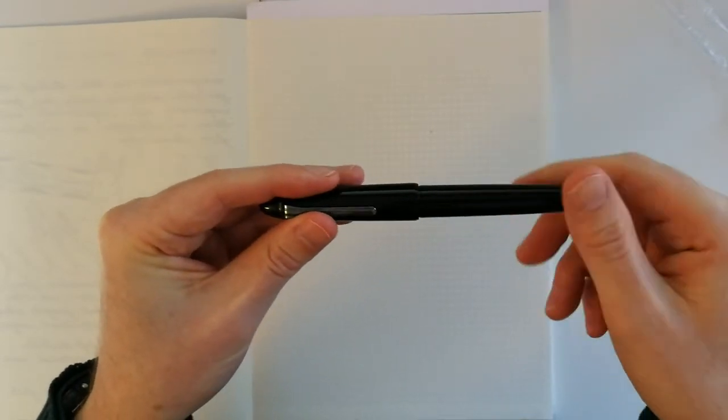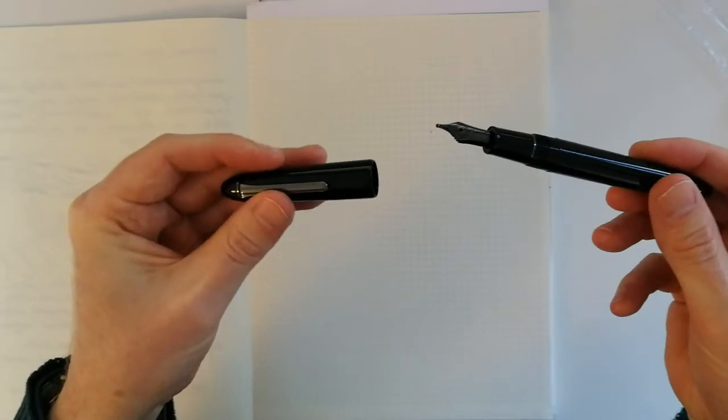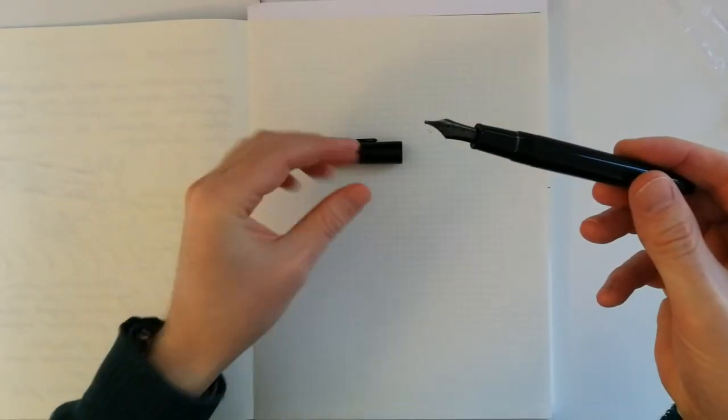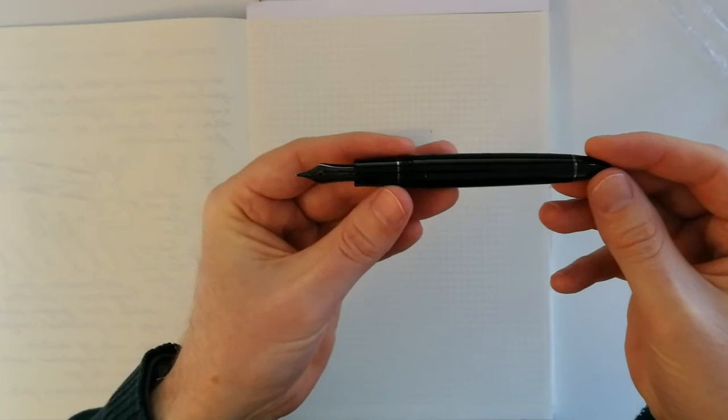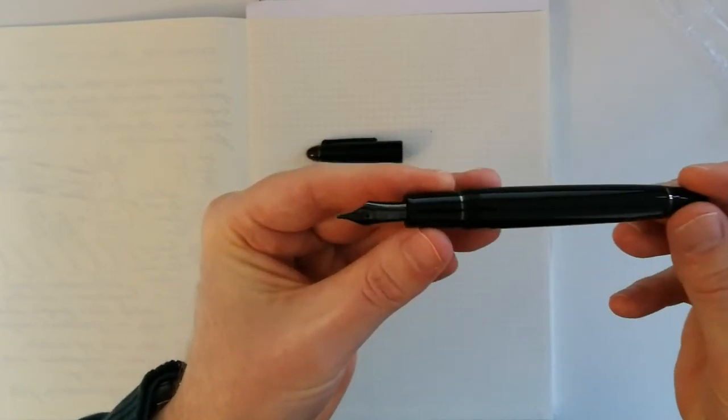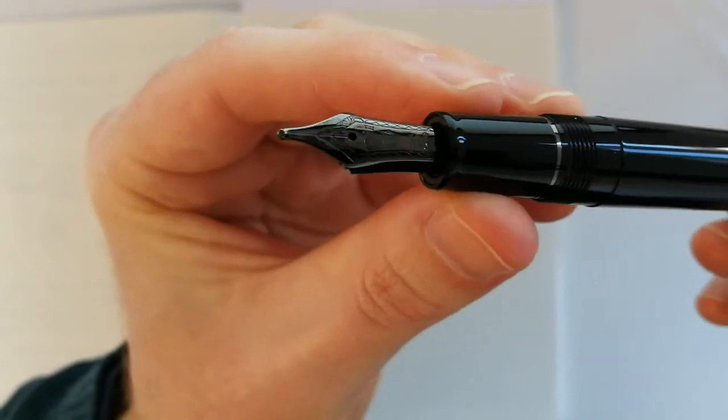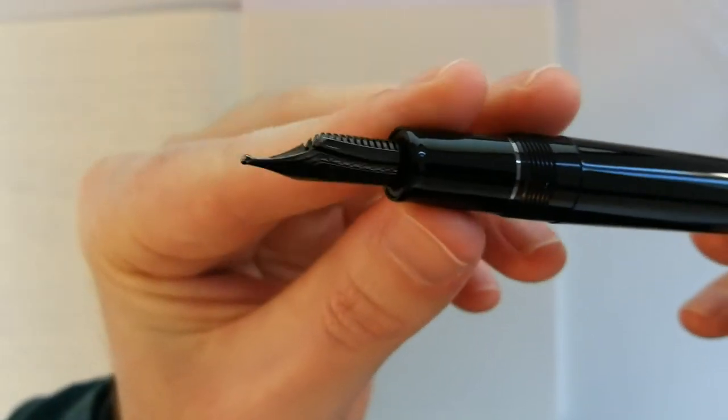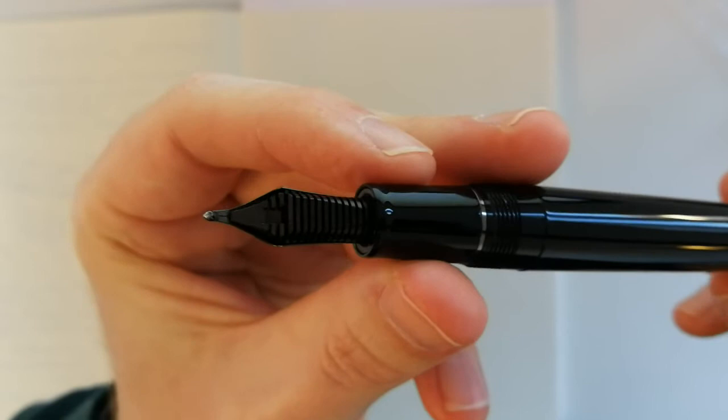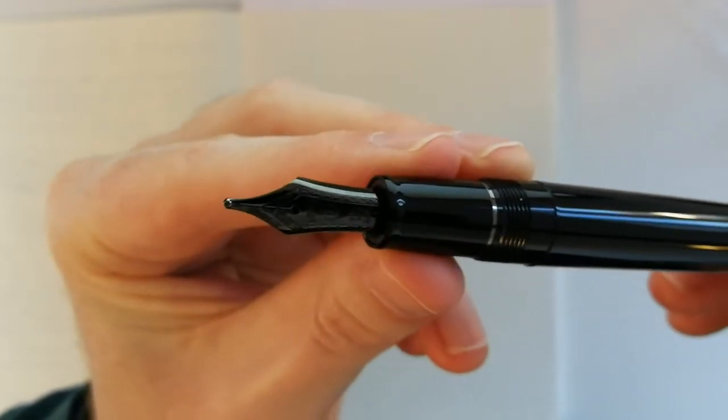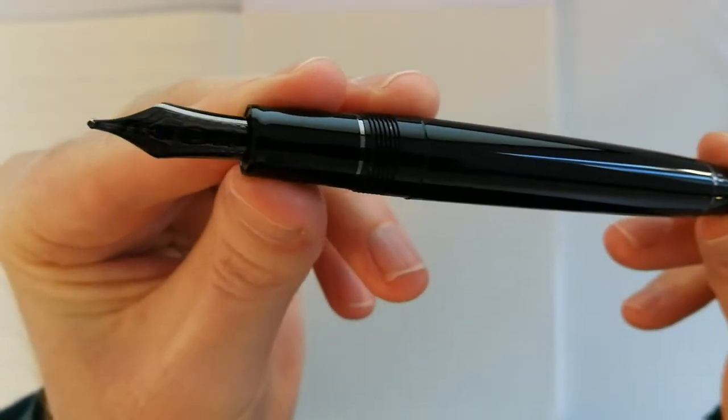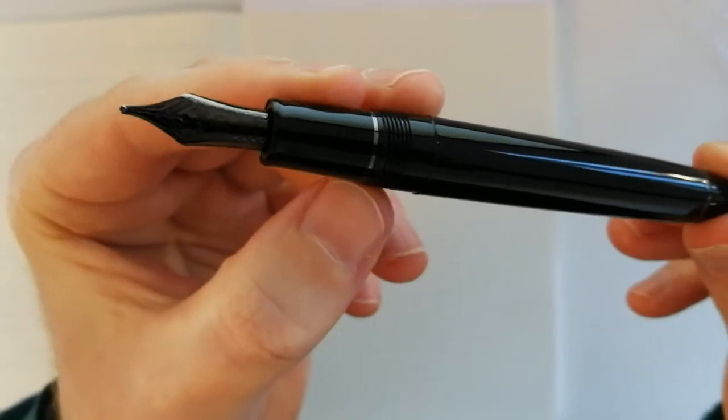Let's have a look inside. It's one and a half turns to get the screw cap off. Inside we've got a beautiful 21 karat gold nib. Now this is a zoom nib. The black nib looks great with the rest of the design of the pen. A little more decoration here.